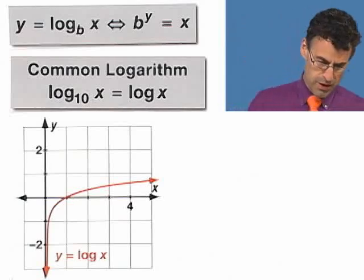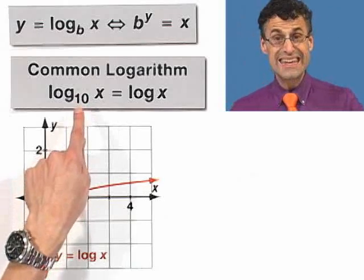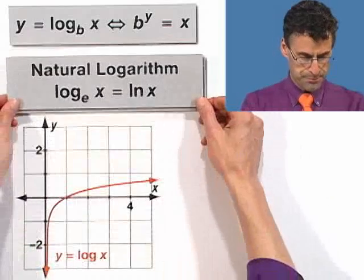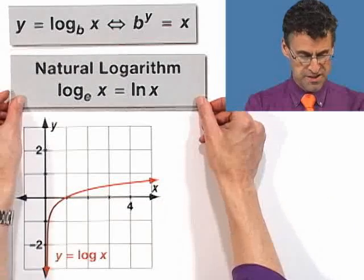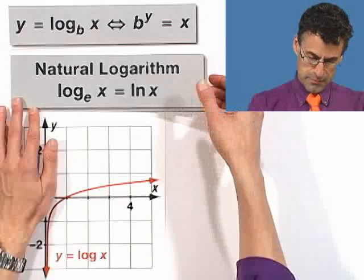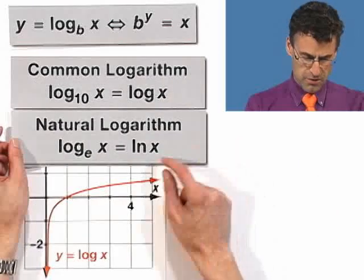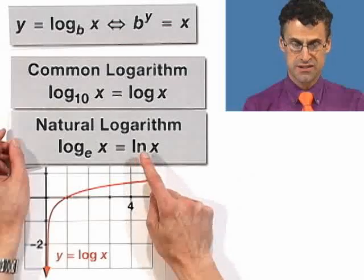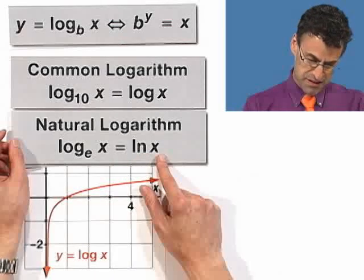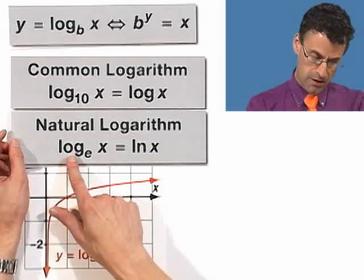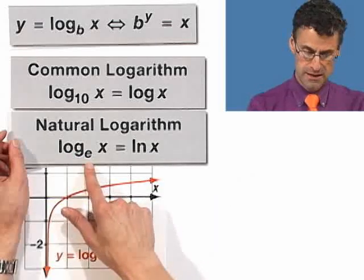Now, that's not to be confused with the special base e. Remember that special number that's named after Euler? That's called the natural log because it appears so often in nature. To not confuse it with the common log, we write ln for basically natural log. The n is natural. So ln x is a shorthand way of writing log base e of x.